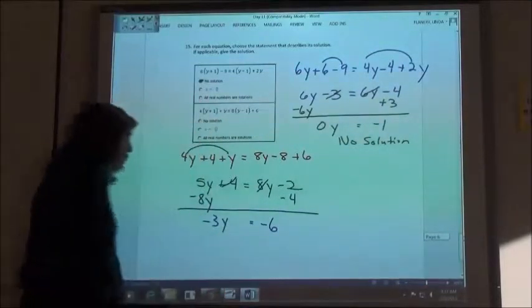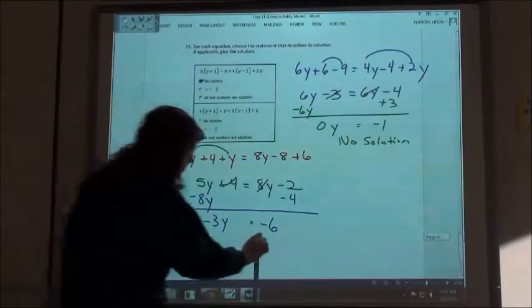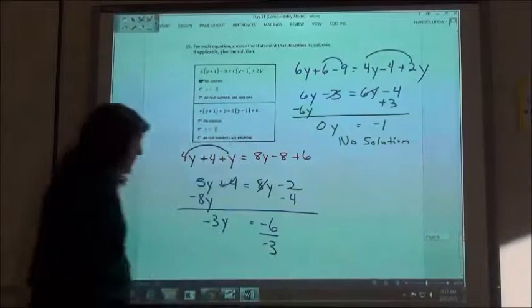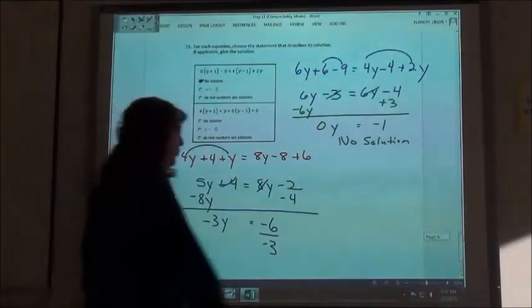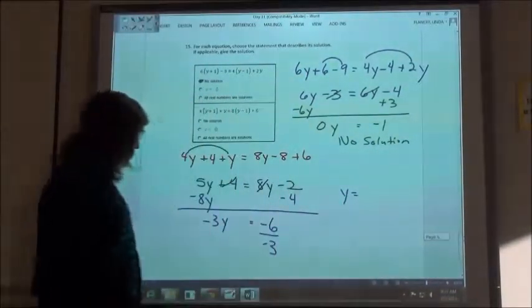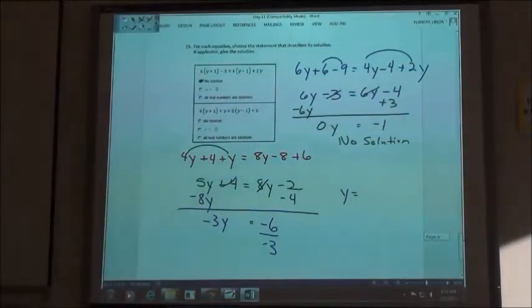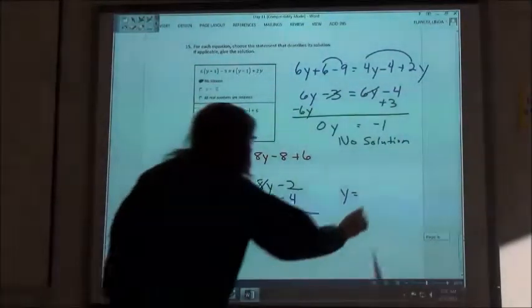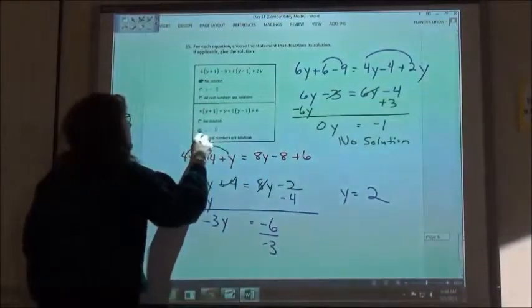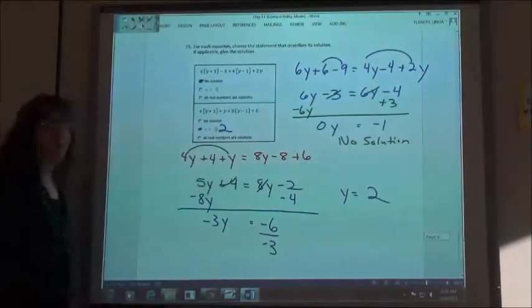Okay. Divide that by negative 6 divided by negative 6. Negative 6 divided by what? Negative 3. Negative 3. Is negative 6 and a plus 2. Negative 1 is going to be 2. Negative 1 is going to be 3. Y is going to be 2.